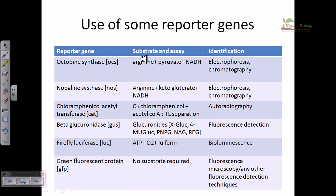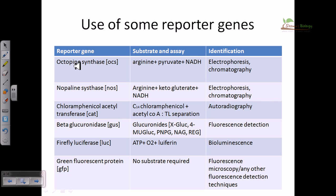These are some uses of reporter genes — the types, the substrates they utilize, and the identification techniques. Octopine synthase (OCS) is important: we give the substrates arginine, pyruvate, and NADH for expression, and then we identify the product with electrophoresis or chromatography. According to the banding pattern we can find the presence of our desired product. Similarly, nopaline synthase (NOS) uses arginine and NADH, but instead of pyruvate we give alpha-ketoglutarate, and detection is again via electrophoresis or chromatography.